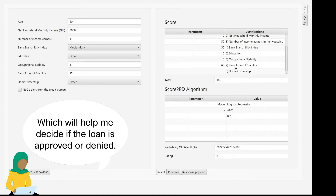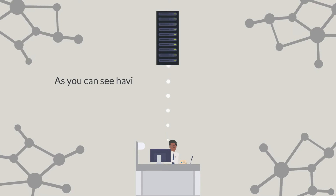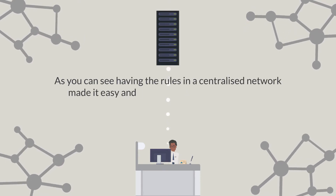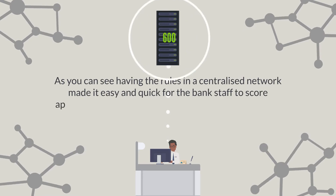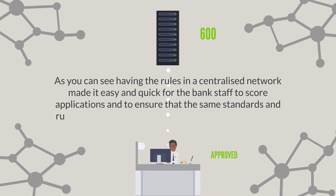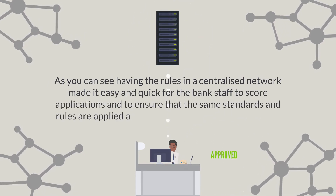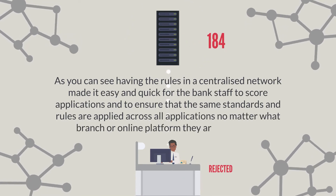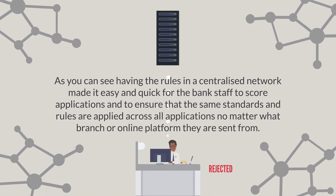These scores and probability of defaulting will help the staff at the bank determine if they accept or reject the application. Having the rules in a centralized network made it easy and quick for the bank staff to score applications, and to ensure that the same standards and rules are applied across all applications, no matter what branch or online platform they are sent from.